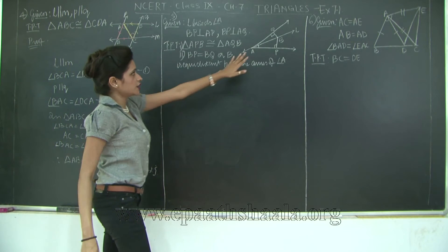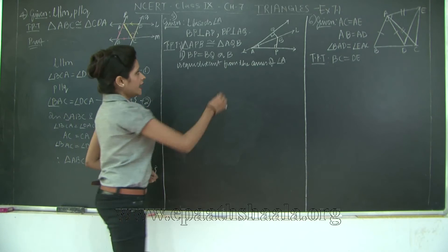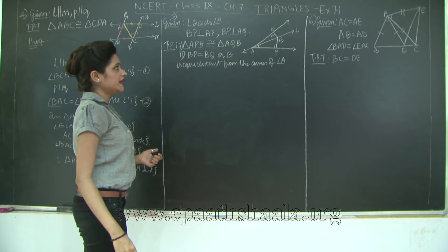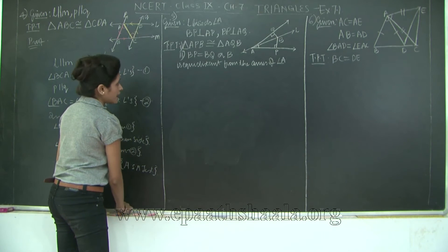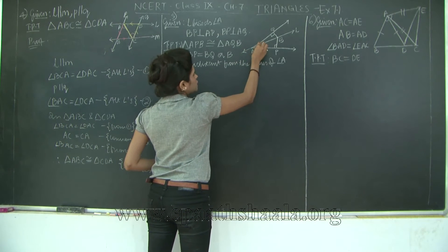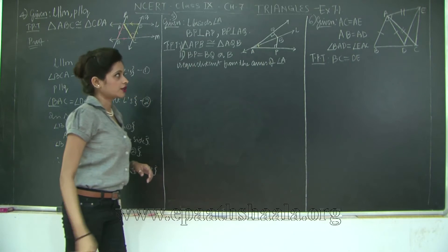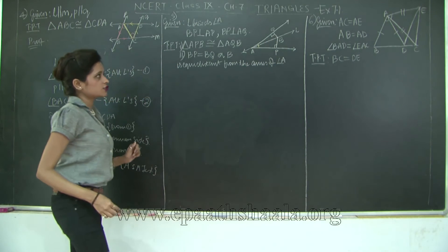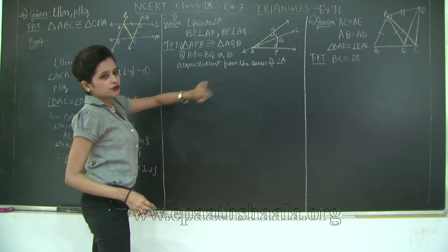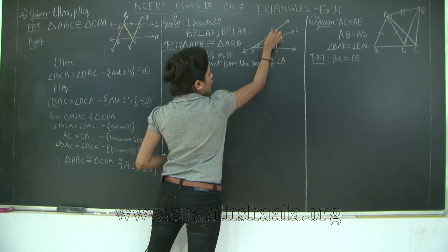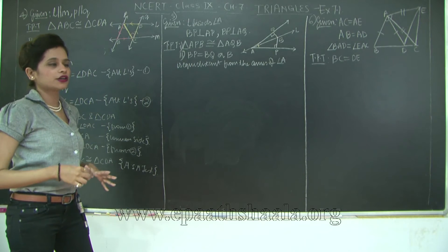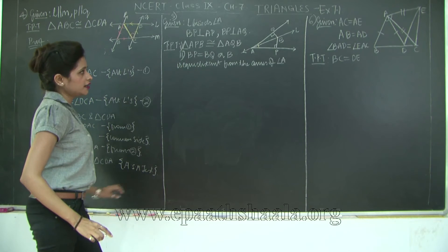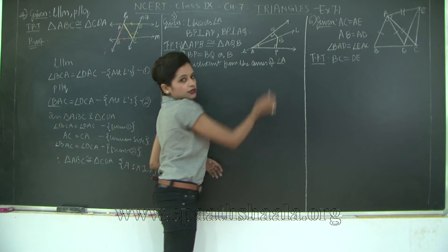Let's move on to question number 5. Here, line L bisects angle A, so I have two angles congruent: angle BAQ and angle BAP. Also BQ is perpendicular to AQ and BP is perpendicular to AP. I need to prove that BP is equal to BQ — meaning these two altitudes are equal — or that B is equidistant from the arms of angle A.